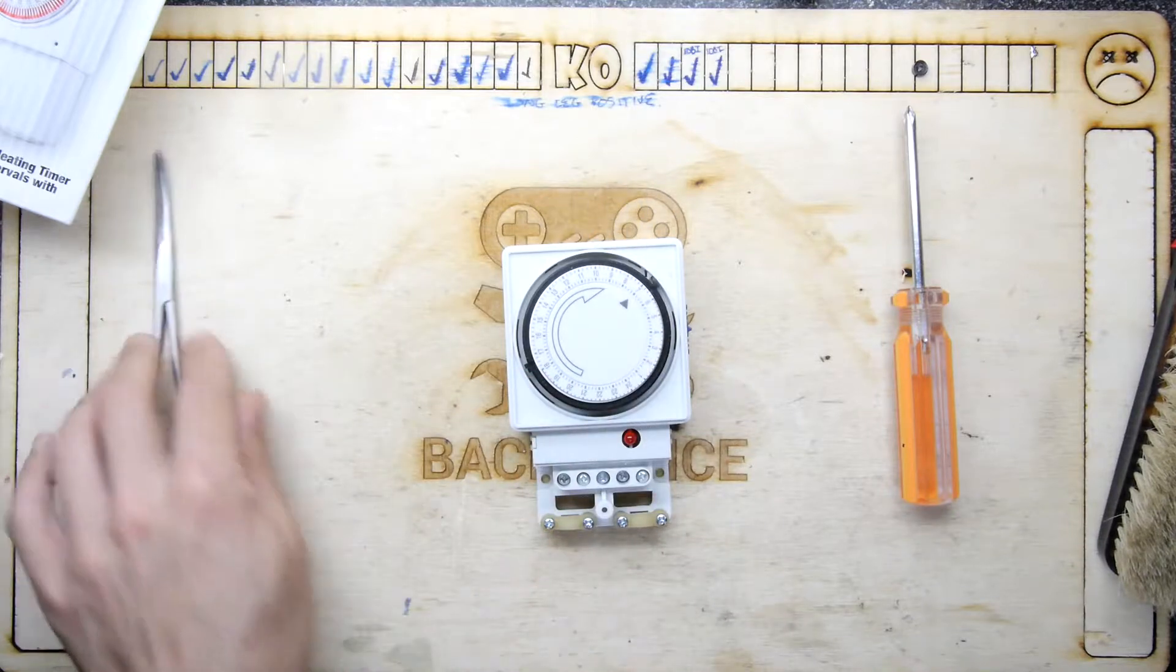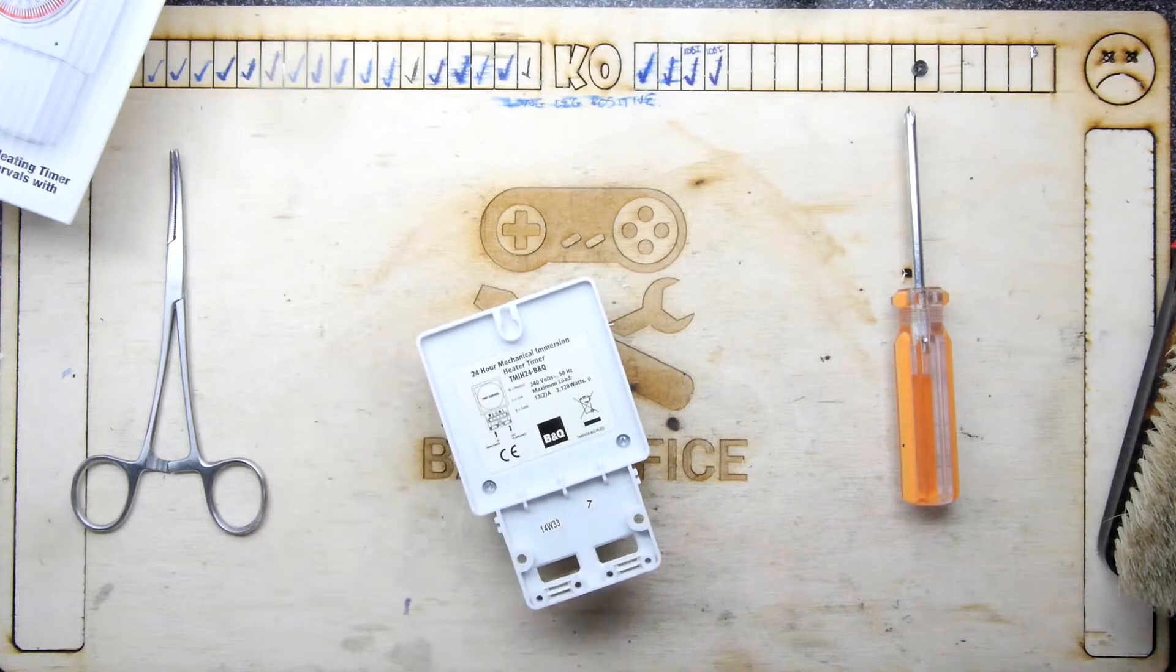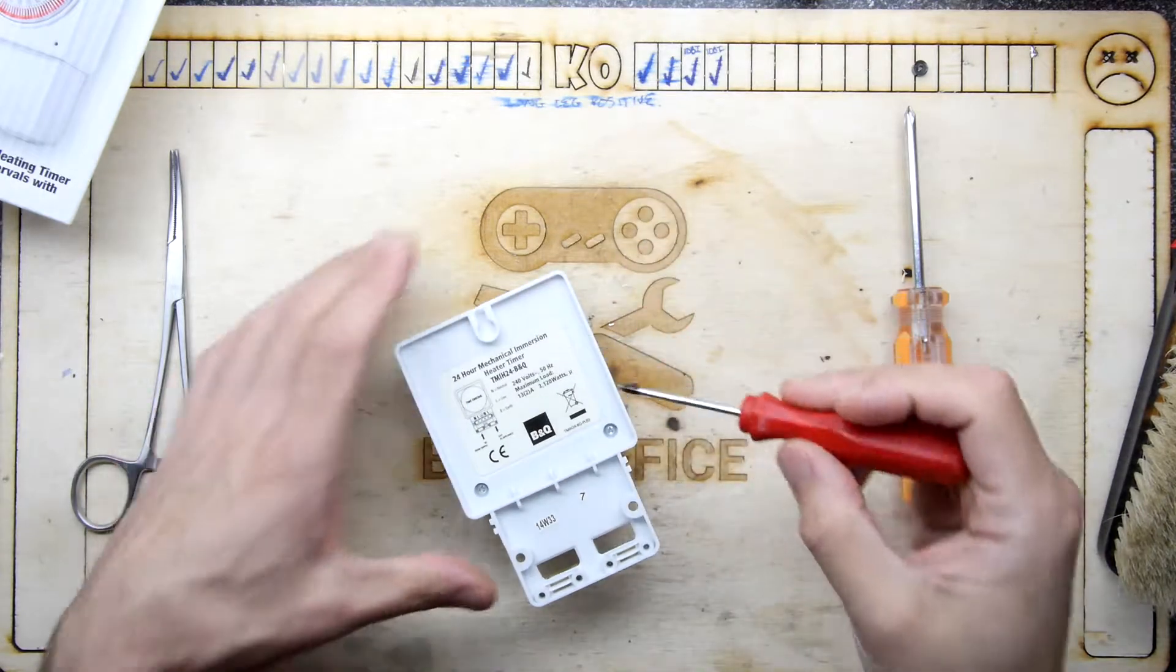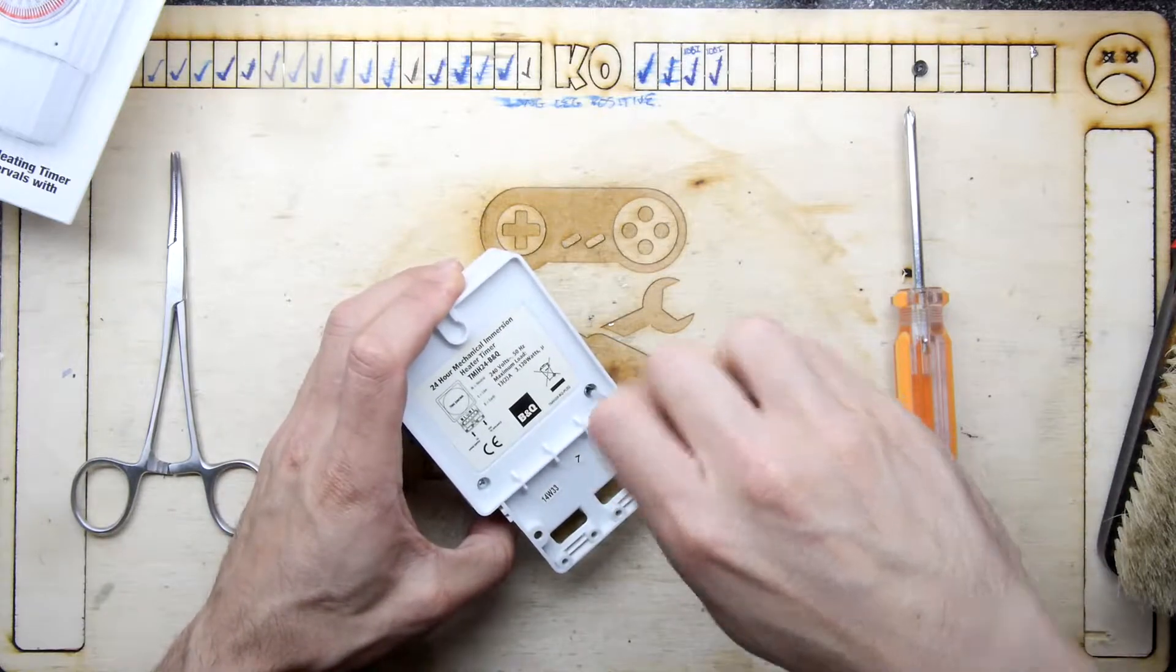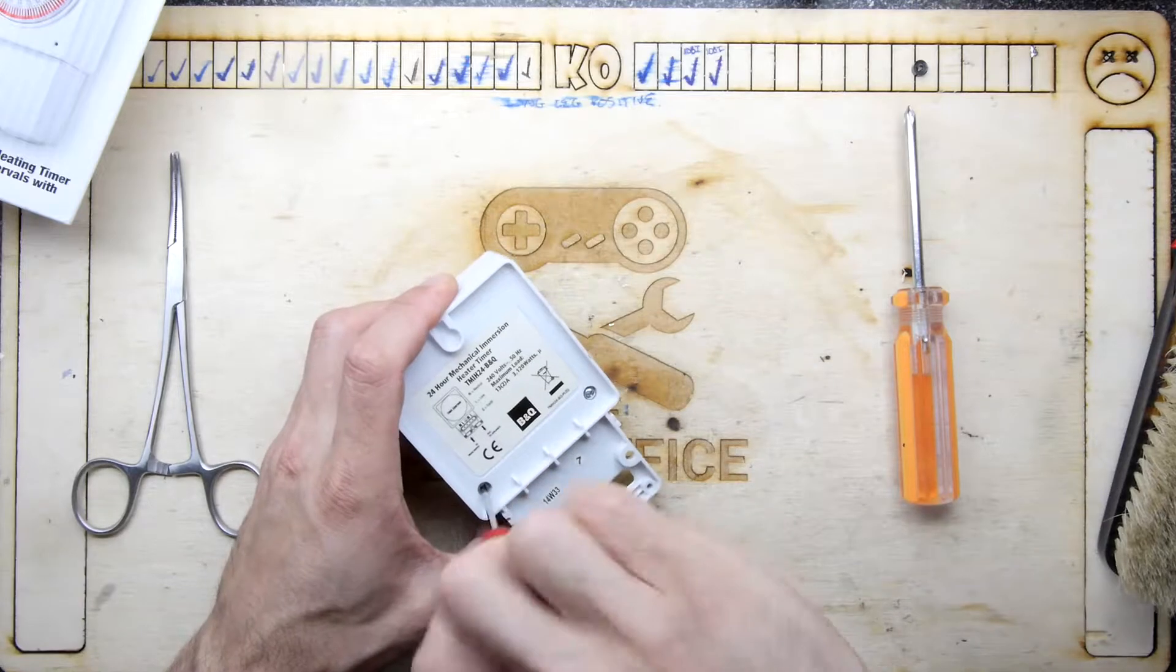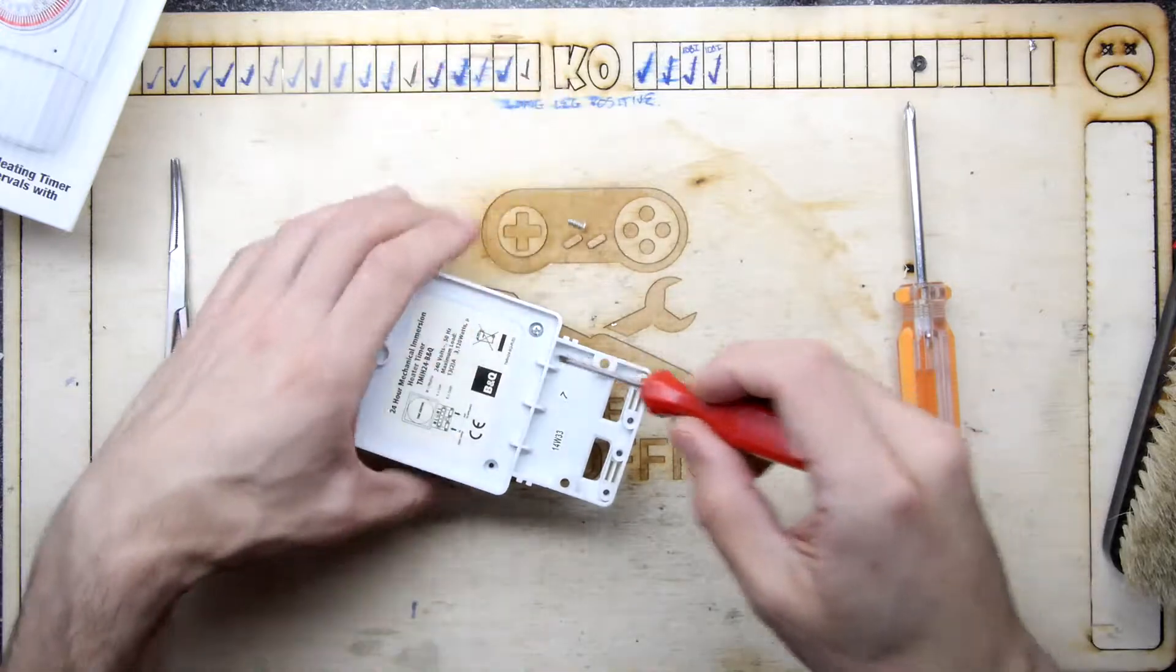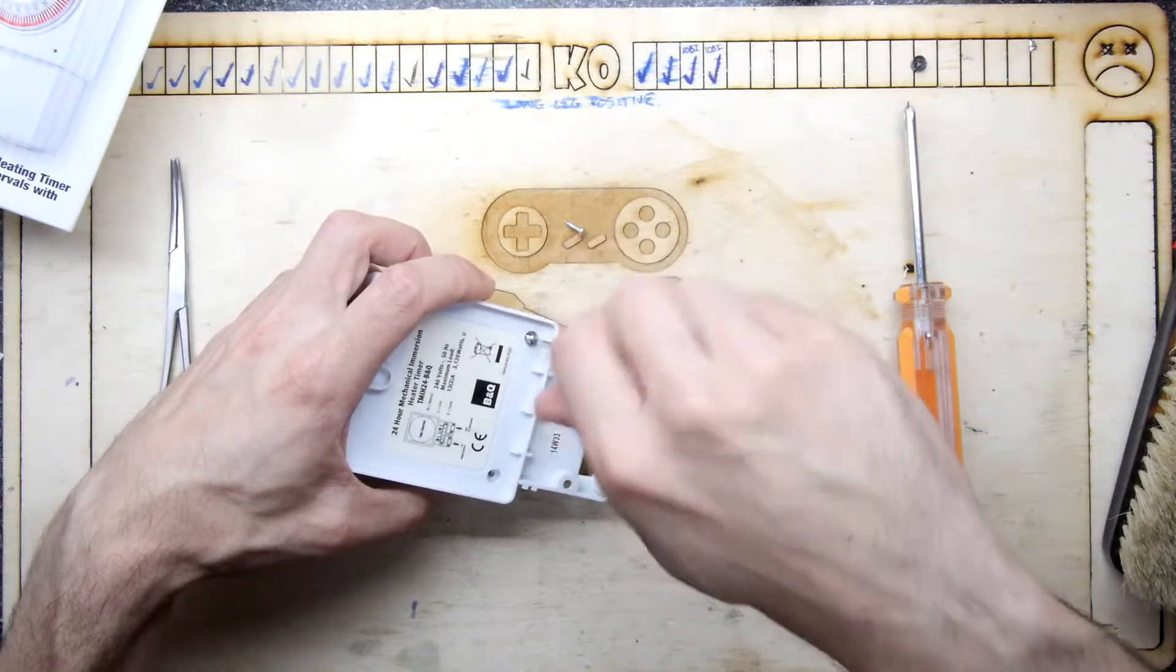Found some forceps, not sure if we're going to need those, but what we are going to need, I can see from the back, is a tri-lobe or tri-wing screwdriver. Let's hope that the Super Nintendo one works, and it does. If you have Nintendo products, get one because it's bloody useful.